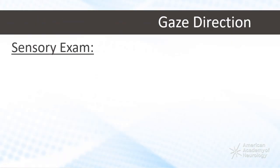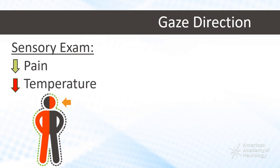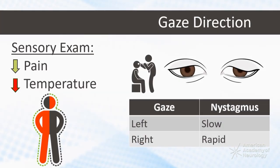On examination, diminished pin prick and temperature sensations are noticed on the left side of her face as well as on the right side of her body. While observing her eyes, you notice left-sided ptosis and miosis with a horizontal nystagmus that changes velocity based on the patient's gaze.